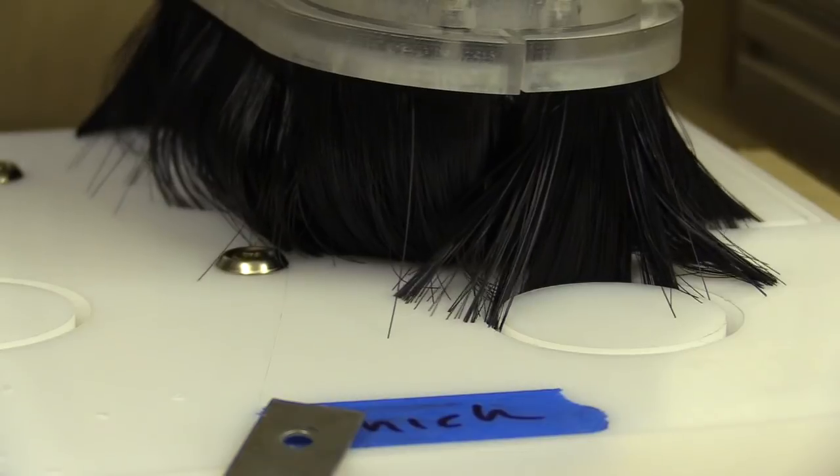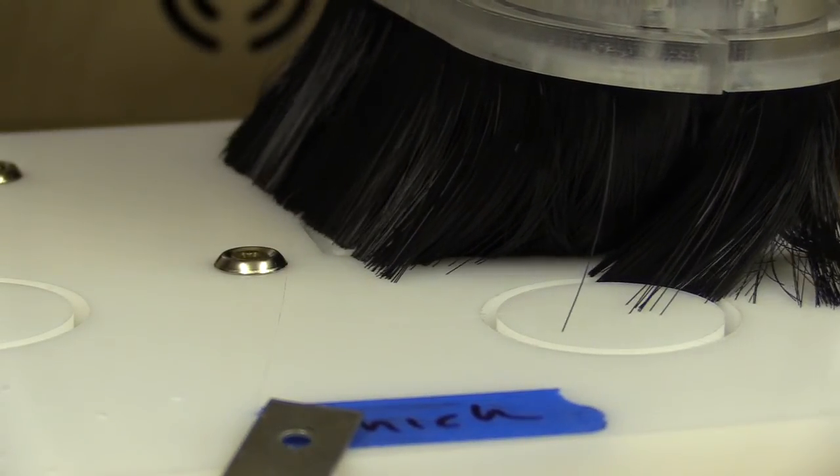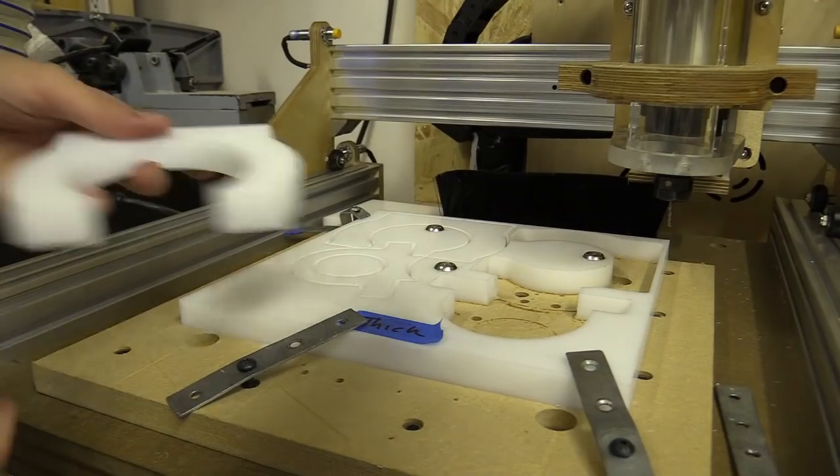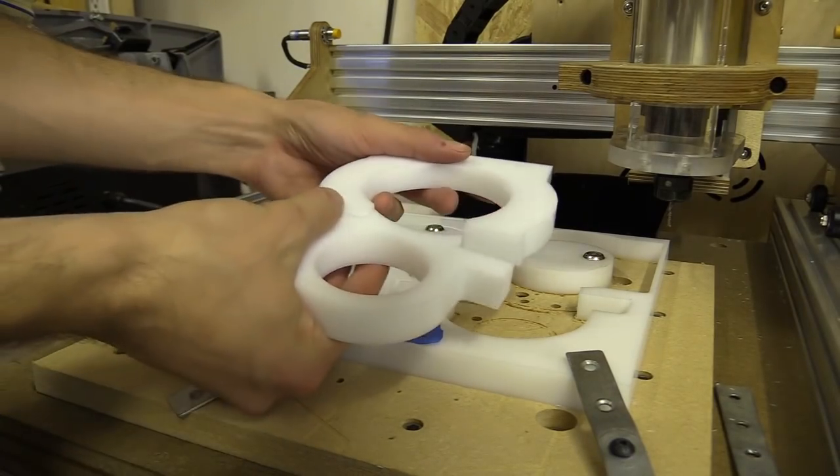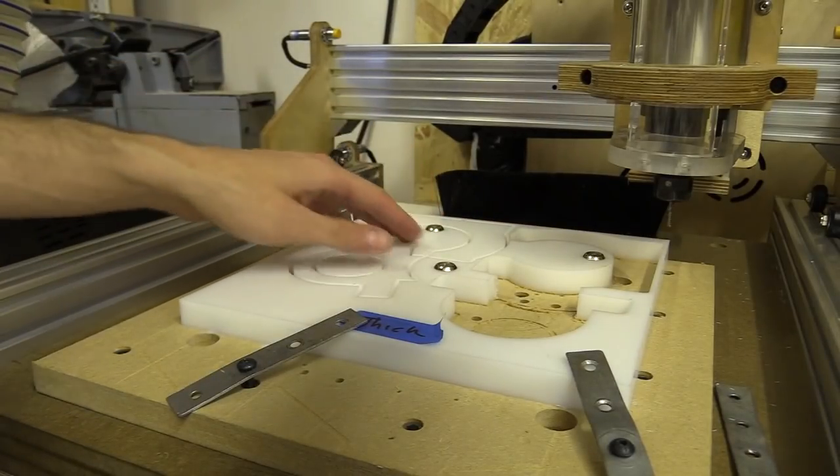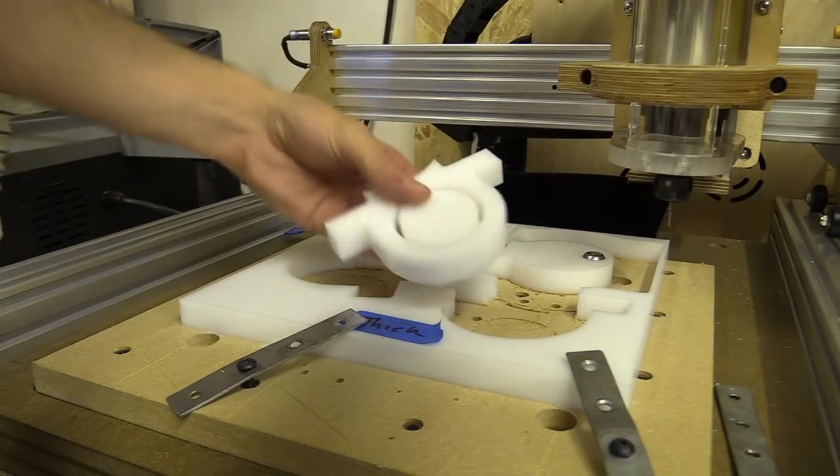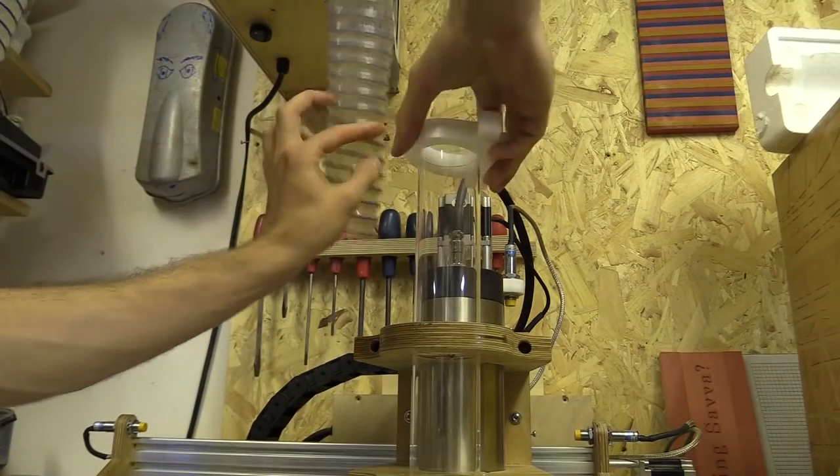These are the spindle mounting parts. I decided to change the location of the extraction port so the dust shoe will also have to change. I took the first set out just because the tabs didn't hold that well. I was worried they were going to move around. Let's just test if this fits.